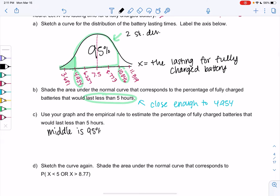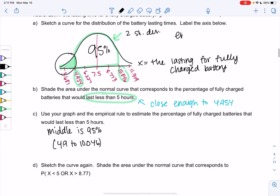So 95% would be between 4.9 to 10.046. That's not quite what we're looking for, right? We're looking for less than 4.9 or less than 5. 4.9 is our approximation for 5. So we know that the entire curve is 100 for 100%. So we'll do 100 minus 95.